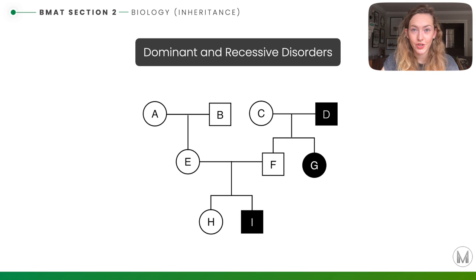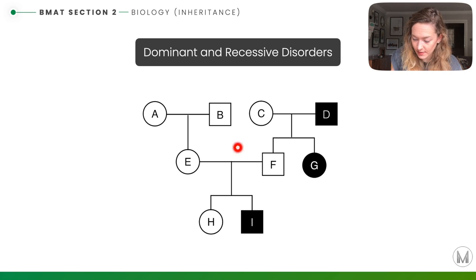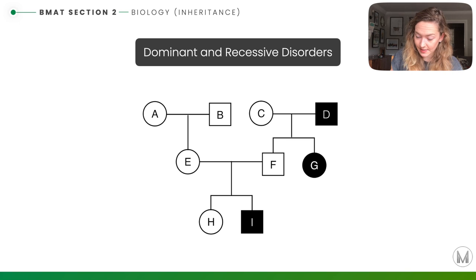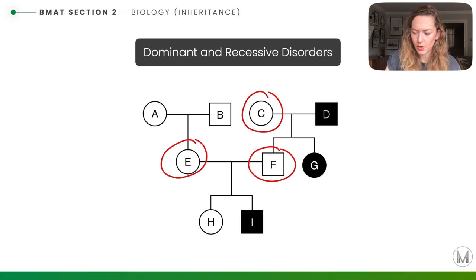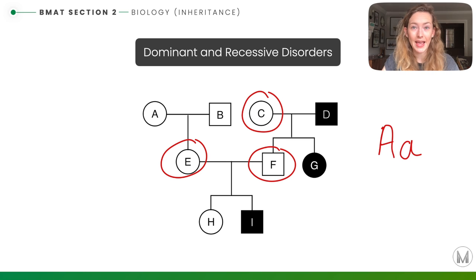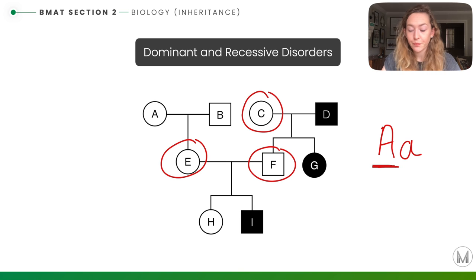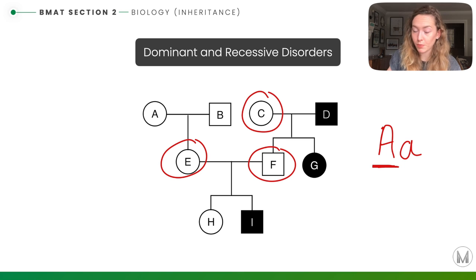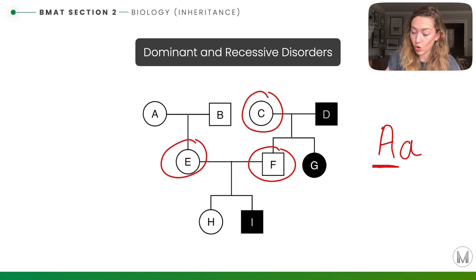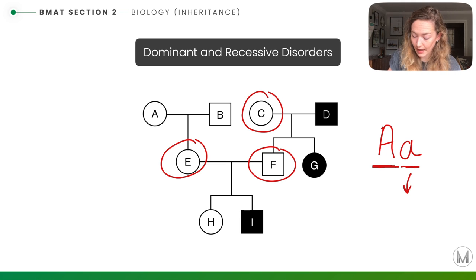This is a recessive condition, and we know this because whenever two unaffected parents have an affected child it must be a recessive condition. Here we have two unaffected parents E and F who have had an affected child I, shown by shading in black. C, E and F are all heterozygous dominant — genotype capital A lowercase a — hetero meaning two different alleles and dominant because a dominant allele is present. These individuals are called carriers: they don't have an affected phenotype but can pass on the recessive allele to offspring. If they breed with another carrier, they can have an affected offspring as shown in this example.